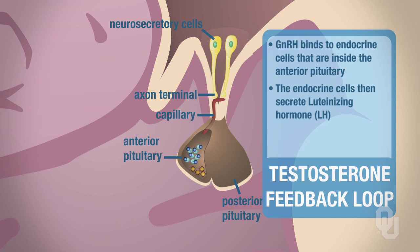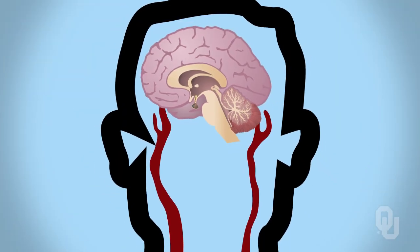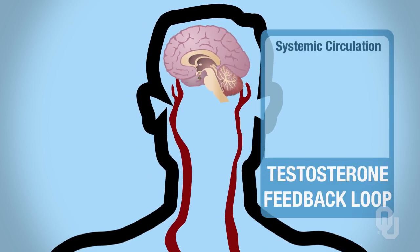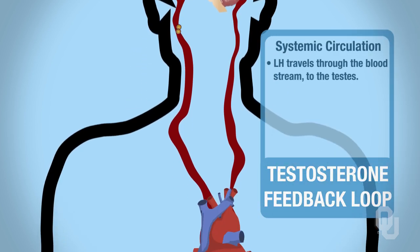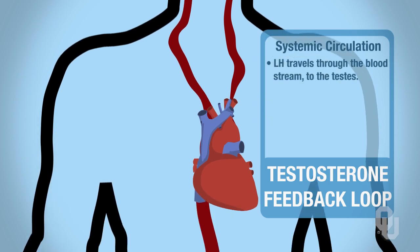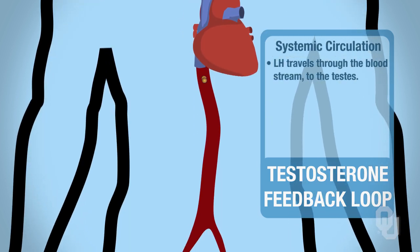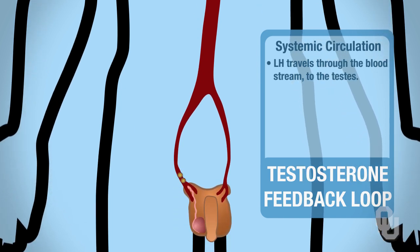Once luteinizing hormone is synthesized and secreted by these endocrine cells, it travels into the bloodstream — this is the systemic circulation. Luteinizing hormone, like all hormones, has to travel through the blood, and it will travel through the blood to the testes.